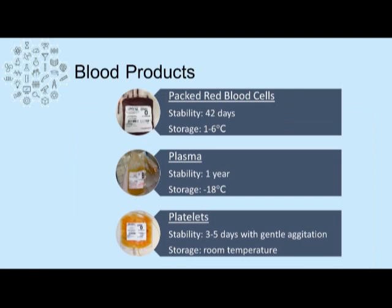This results in three major blood products. Packed red blood cells are stable for 42 days at one to six degrees Celsius. Plasma is stable for a year if stored at minus 18 degrees Celsius. And because platelets need to be stored at room temperature, they are only good for three to five days with gentle agitation.